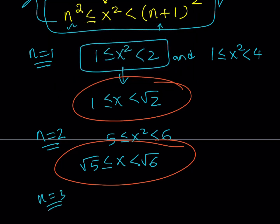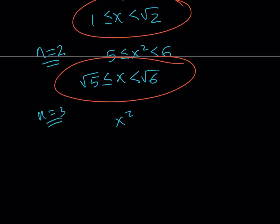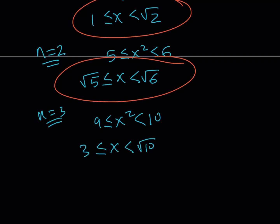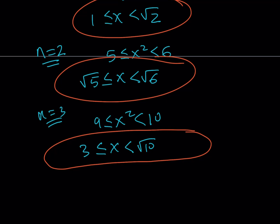For n equals 3, the last case: 4 times 3 minus 3 is 9, so x squared is between 9 and 10. Taking square roots with x positive gives x between 3 and root 10, half-closed: [3, √10). This concludes the solution.